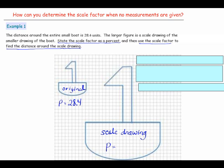In order to calculate the scale factor, you need to know some measurements of the boats. You're going to measure a vertical or a horizontal segment on each of the figures. The reason you want to use a vertical or horizontal segment is so that you can count it accurately. Here, I can count this: 1, 2, 3, 4. It would be difficult to count the length of a diagonal segment. Then, on the scale drawing: 1, 2, 3, 4, 5, 6, 7, 8, 9, 10, 11.